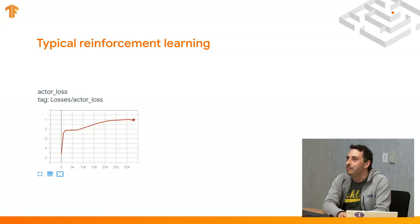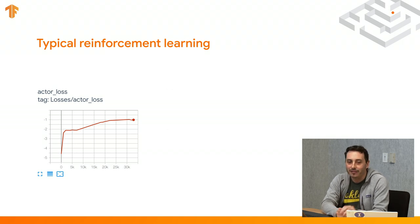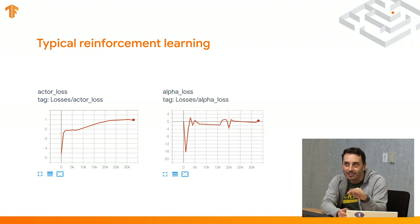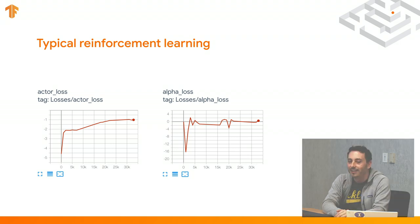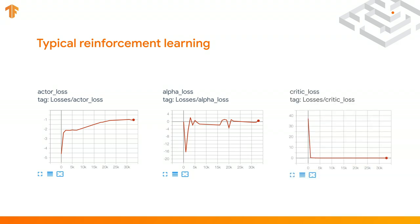This is what it looks like in many RL cases. We have the actor loss going up — in this case, it's actually good because it's learning something. We have the alpha loss with almost noise around zero, fluctuating quite a bit. And the critic loss in this case basically collapsed — at the beginning it was very high, it got very small, and then it doesn't move. But this model is actually good and learning well.